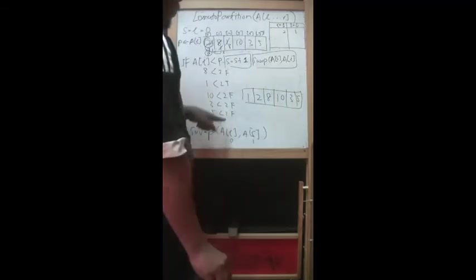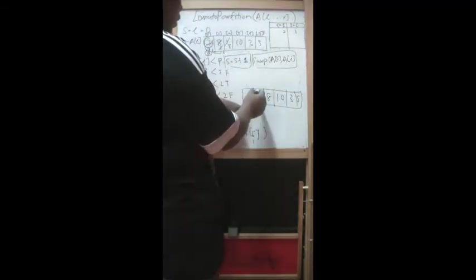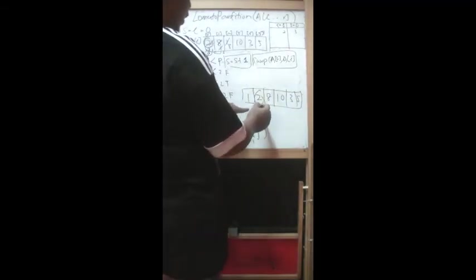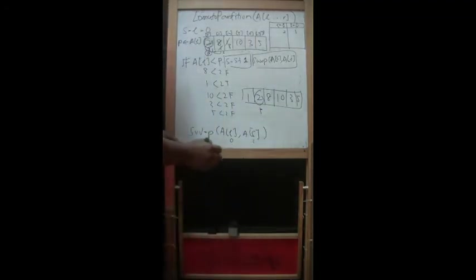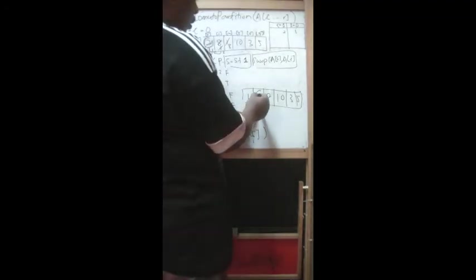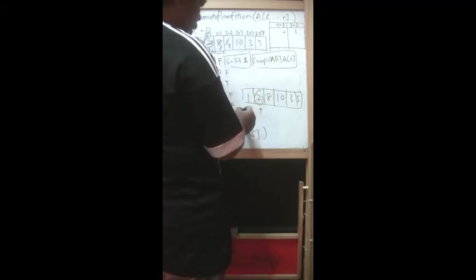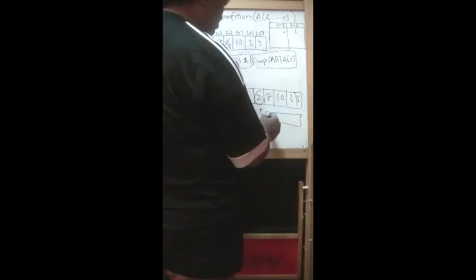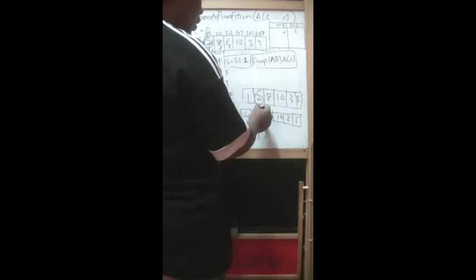So after finish this, so this is actually the pivot value, the partition value that we are looking for. So this is the partition value. Then we will split this. This becomes one array. This becomes another sub array: eight, ten, three, five here. And two is the partition value.